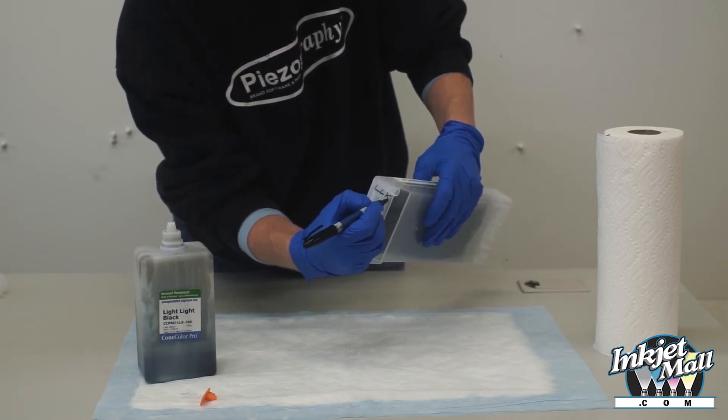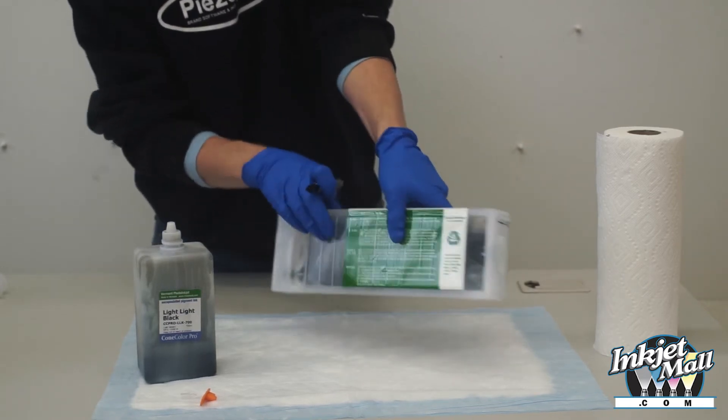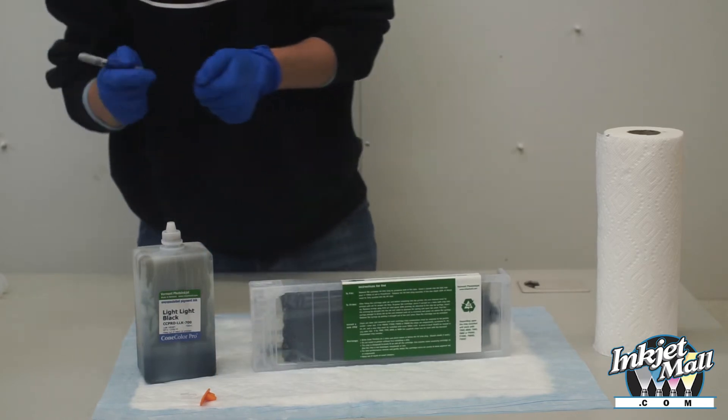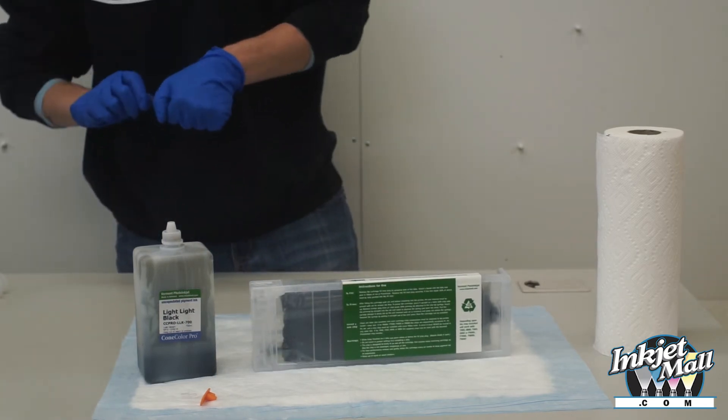Write the ink color or shade on the back of your cartridge above the fill hole plug with a sharpie. This is important to remember to do.